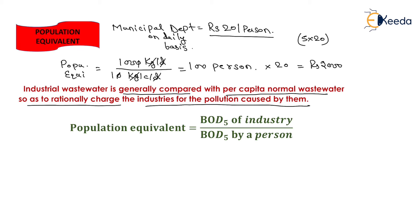That is why we calculate the population equivalent. Its formula is: Population Equivalent = BOD5 of industry (in kg per day) ÷ BOD5 per capita per day (in kg per capita per day). We calculate the population equivalent and multiply it with the unit rate to determine the cost of total waste produced by that industry. That will be all about relative stability and population equivalent. Thank you very much, students.